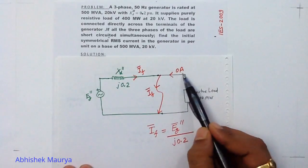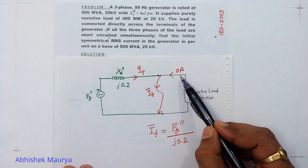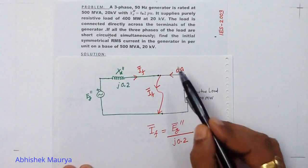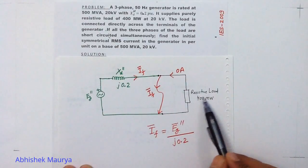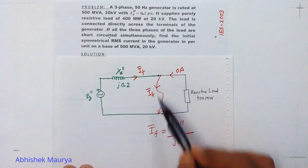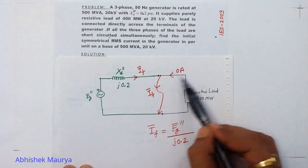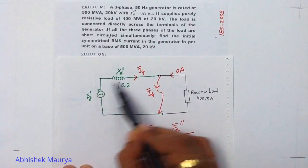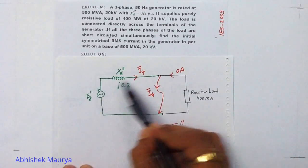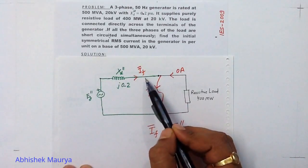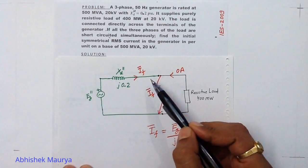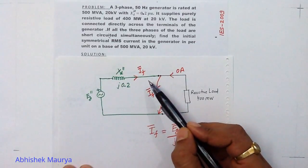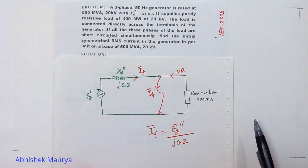Here I have written 0 ampere. The load given is resistive, and during the fault a resistive load cannot feed fault current. That's why 0 ampere is written here — the complete fault current will be fed by the generator. There are three names for IF: it is called fault current, sub-transient current, or initial symmetrical RMS current.